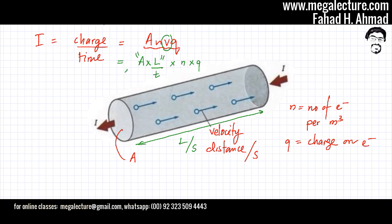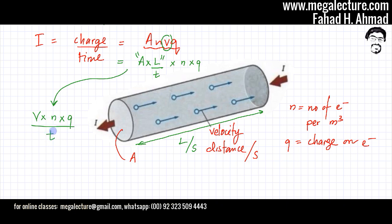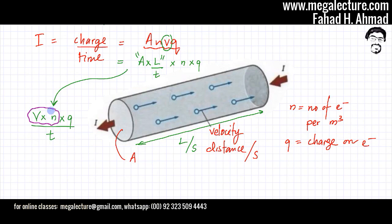So, A into L would be equal to volume. Cross-sectional area into the length is basically the volume of the wire. So it's going to be volume into N into Q, divided by time. Now, if you focus on volume into N — N is the number of electrons per unit volume — if I multiply it by the volume, that gives the total number of electrons. Number of electrons per meter cube into volume gives the total number of electrons.